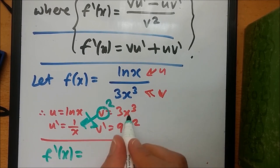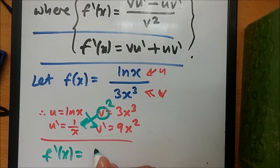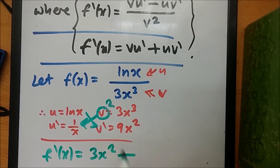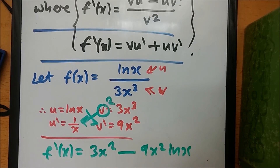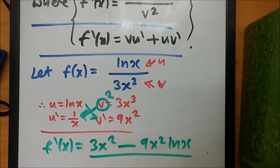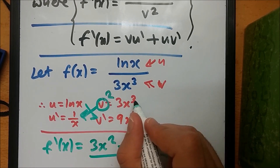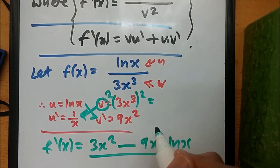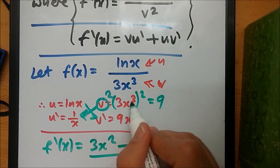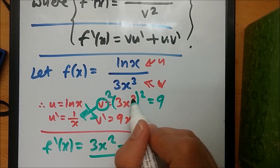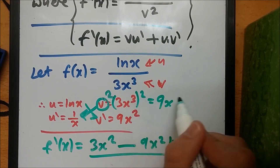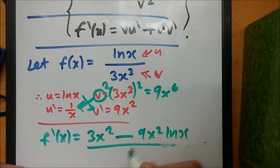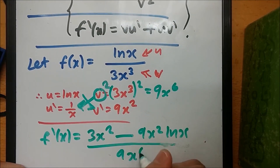Replacing all the values into the quotient rule expression, we get: v times u prime, which is 3x cubed times 1/x — giving 3x squared — minus u times v prime, which is log(x) times 9x squared. All divided by v squared, which is (3x cubed) squared. Squaring gives 9 in front and the power becomes x to the 6. That's the solution.